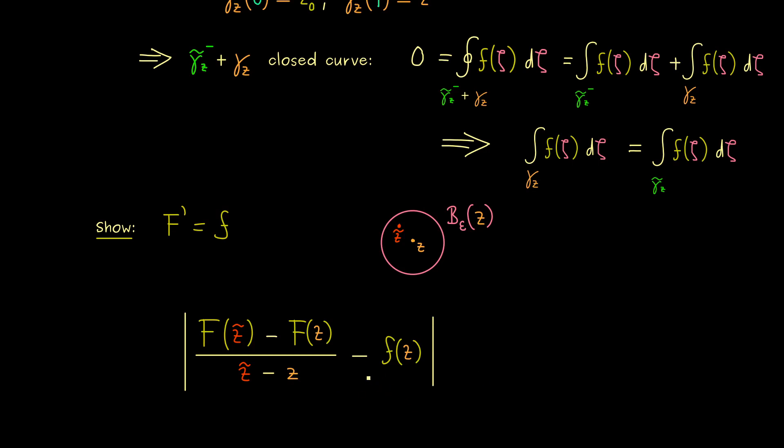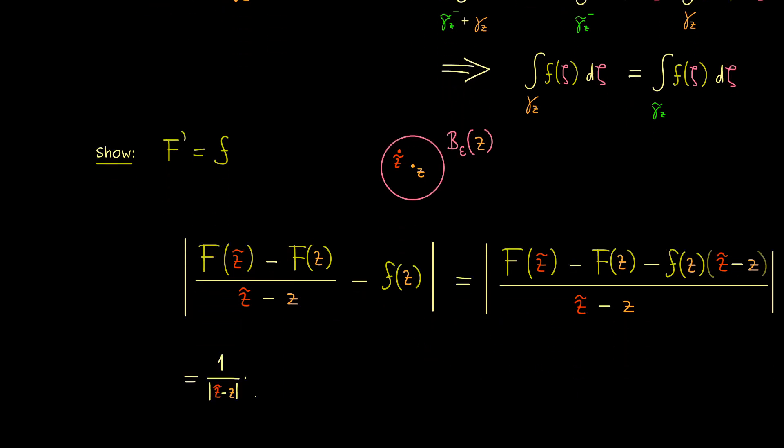The first thing I want to do is to bring f(z) to the numerator here. Of course, this is no problem at all, we can just expand this term. So here you should see, in the end we want to send Z tilde to Z, such that here we find the derivative of capital F, and this whole thing should then go to zero. And indeed, we will get this by looking at the numerator here. Hence let's put in the definition of capital F. Please recall, F(Z tilde) is given by a contour integral where the curve goes from our fixed Z₀ to Z tilde. And now of course, in the same sense, we can put in capital F(z). In other words, here you see we have the difference of two contour integrals over the same function.